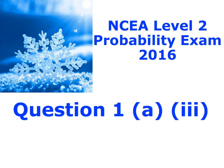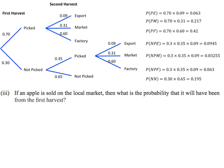Here is question 1a part 3. We've got our tree diagram at the top with all our different combinations of our first and second harvest, and then going to export market or factory. Question three is saying: if an apple is sold at the local market, what is the probability that it was from the first harvest? This is now only talking about apples that meet that criteria of being sold at the local market.